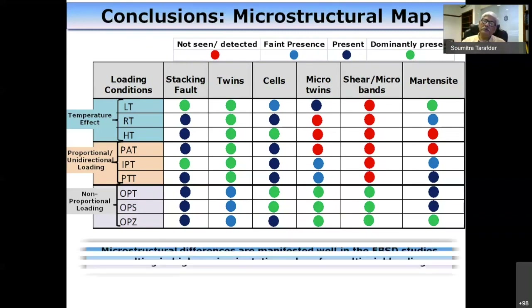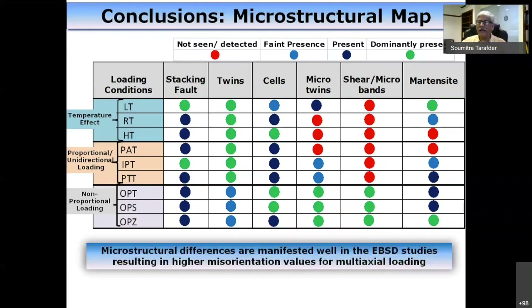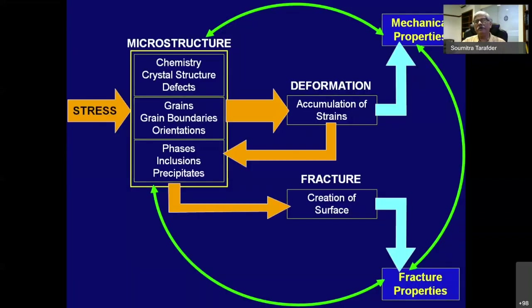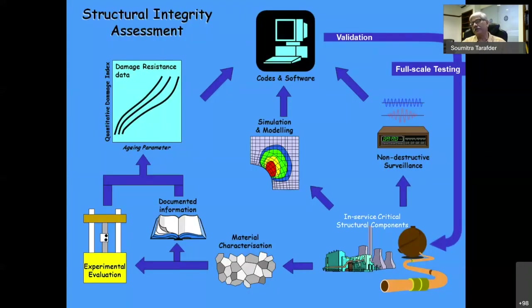In summary, for various types of multiaxial loading — in-phase and out-of-phase — we observed different dominant microstructural features including martensite, shear bands, microtwins, cells, twins, and stacking faults. This work essentially establishes the correlations between structure and properties, and generates data for structural integrity assessment. Thank you very much.